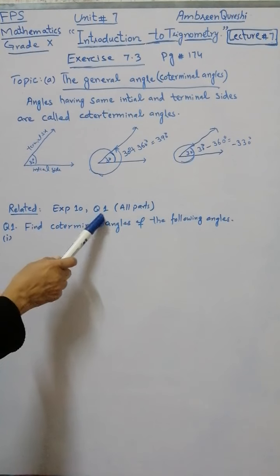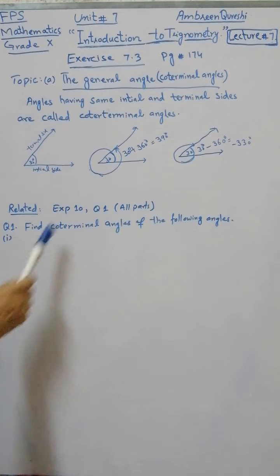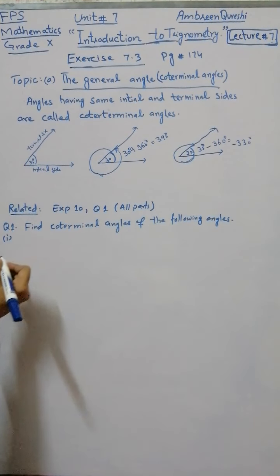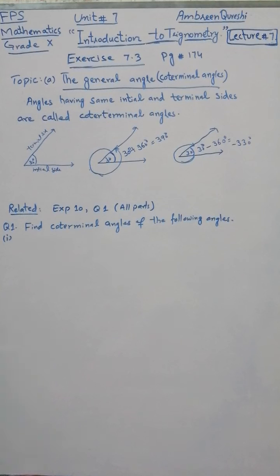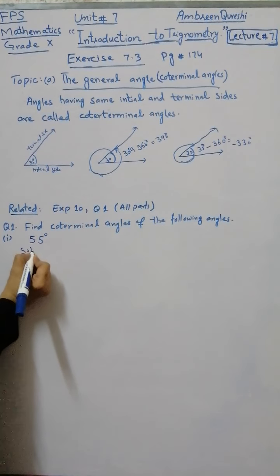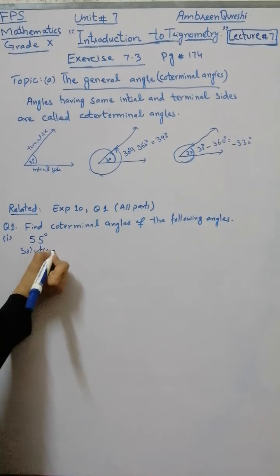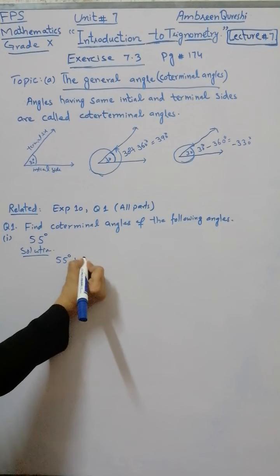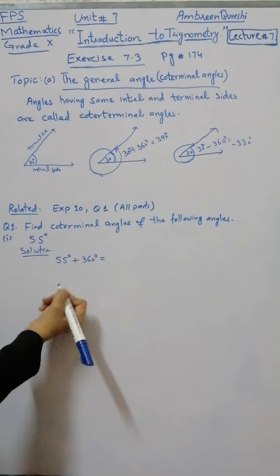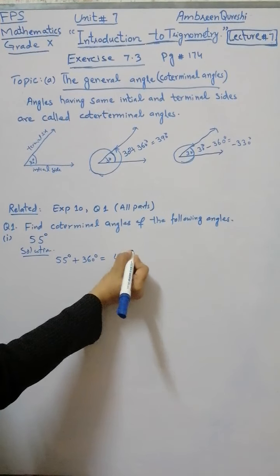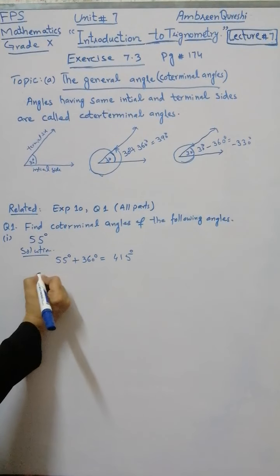Now, this is example number 10, question 1 with all its parts. The question is: find the co-terminal angles for the following angles. The first part — the angle given is 55 degrees. After writing the solution, when you add 360 degrees to 55 degrees, you will have the answer 415. This is the first co-terminal angle.